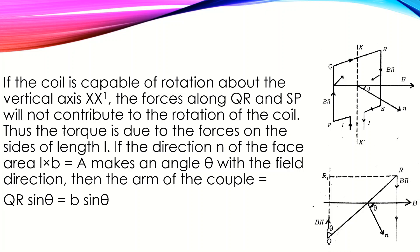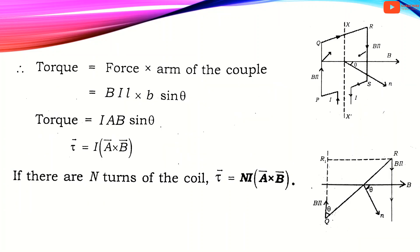Let's take a look at the torque. Torque is equal to force into arm of the couple. Here, QR is the side of length B. In triangle RR1Q, sin theta equals RR1 divided by QR, that is RR1 divided by B. RR1 is the perpendicular distance between the two forces — that is the arm of the couple — equal to B sin theta. Therefore, torque equals force into arm of the couple, which is BIL into B sin theta.